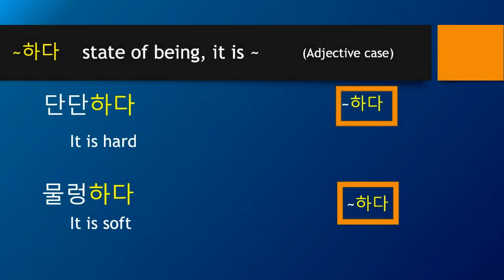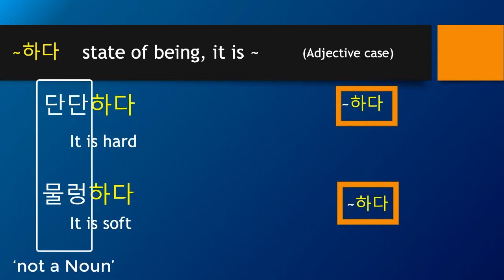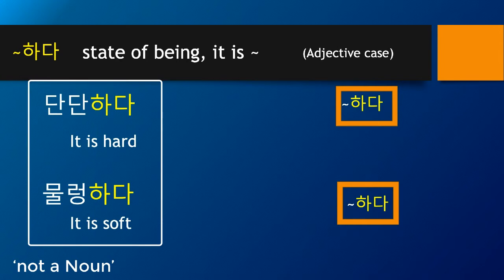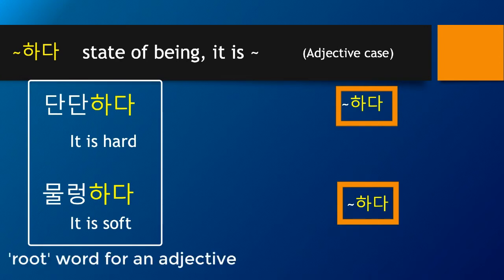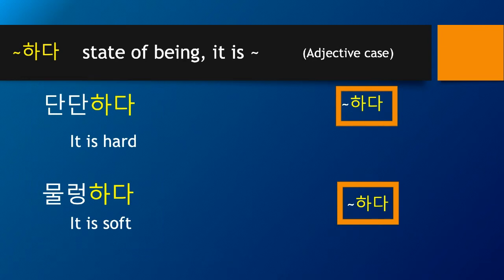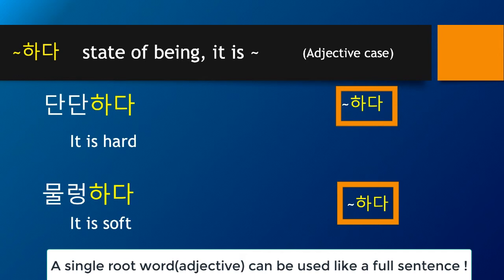Let's take a look at the 하다 case. Unlike 아침, 저녁, 밤, 낮, which are nouns, 단단 or 물렁 itself is not a noun. 단단하다 or 물렁하다 is a root word for an adjective. 단단하다 means it is hard, and 물렁하다 means it is soft. So this single word, 단단하다 or 물렁하다, can represent 'it is hard' or 'it is soft.' This shows that 한글 can represent something in a very compact way.